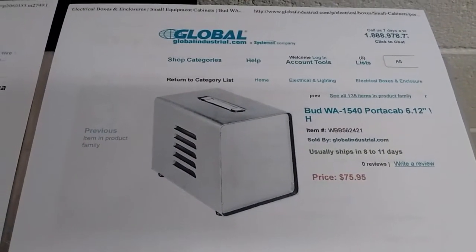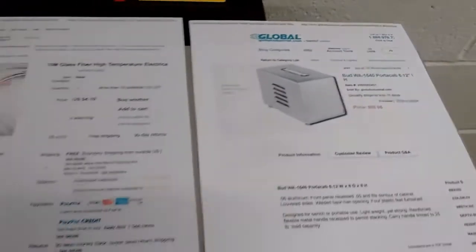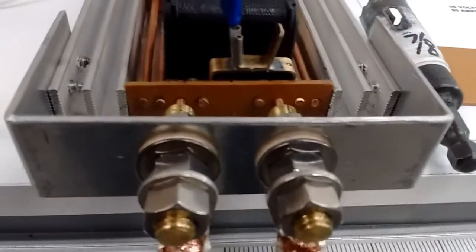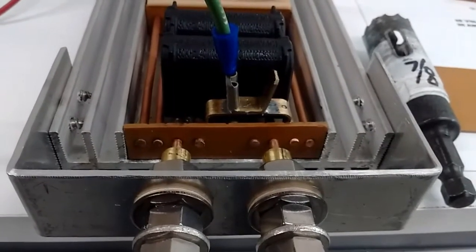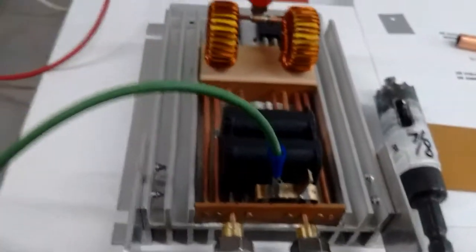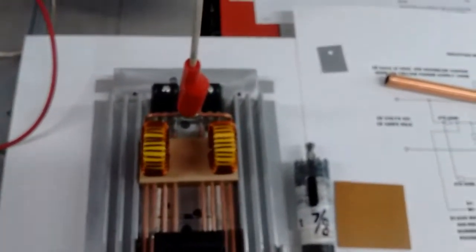The whole thing is going to go in this case from Global and it'll have a voltage gauge and amperage gauge on the front of it. These two connectors here will stick out the front to bolt on the wires, because I want this to be portable and I want it to plug in the wall. I'm going to use it to heat up nuts and bolts that won't come off on different cars and trucks.